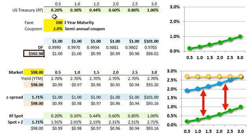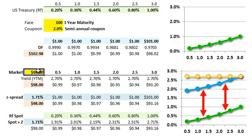However, this uses the theoretical spot rate curve, so this is the price if these cash flows are risk-free. This is a risky bond, so the actual market price is going to be lower. I'm using $98 as the market price, and you can see how this difference reflects the credit risk of this risky bond.